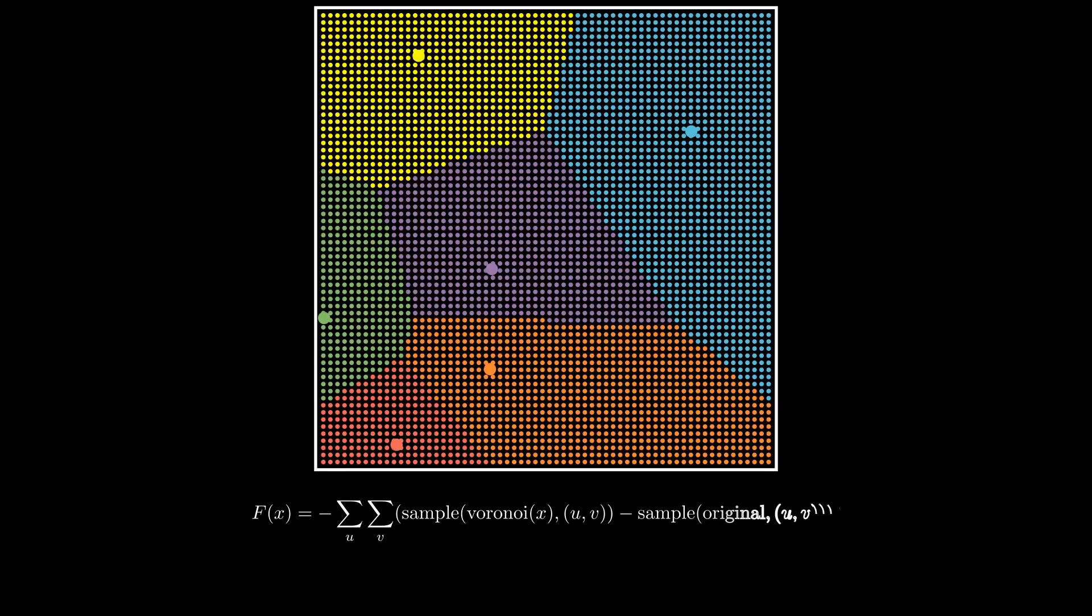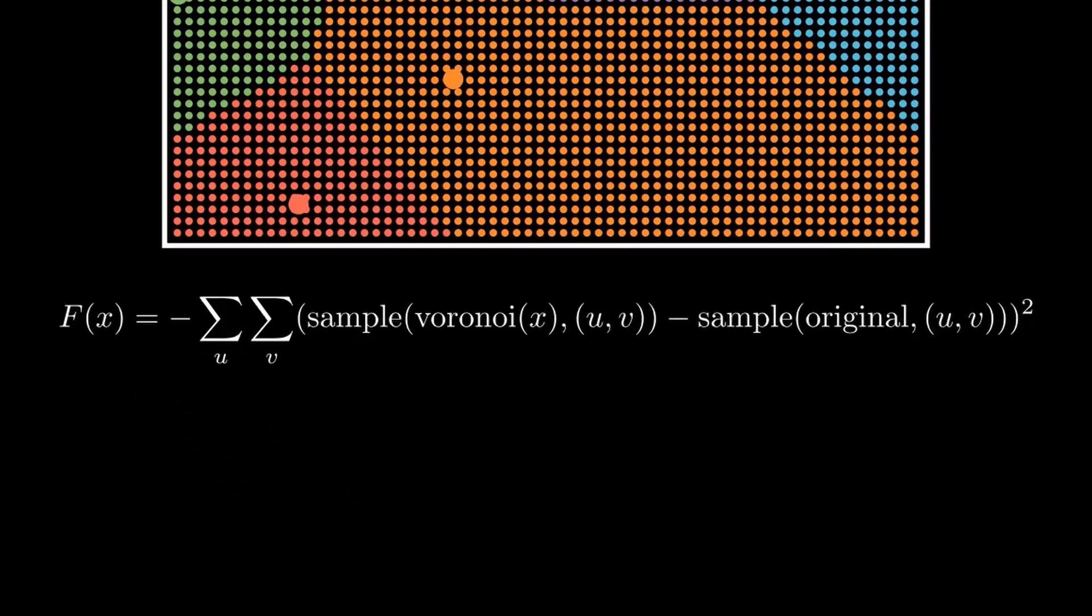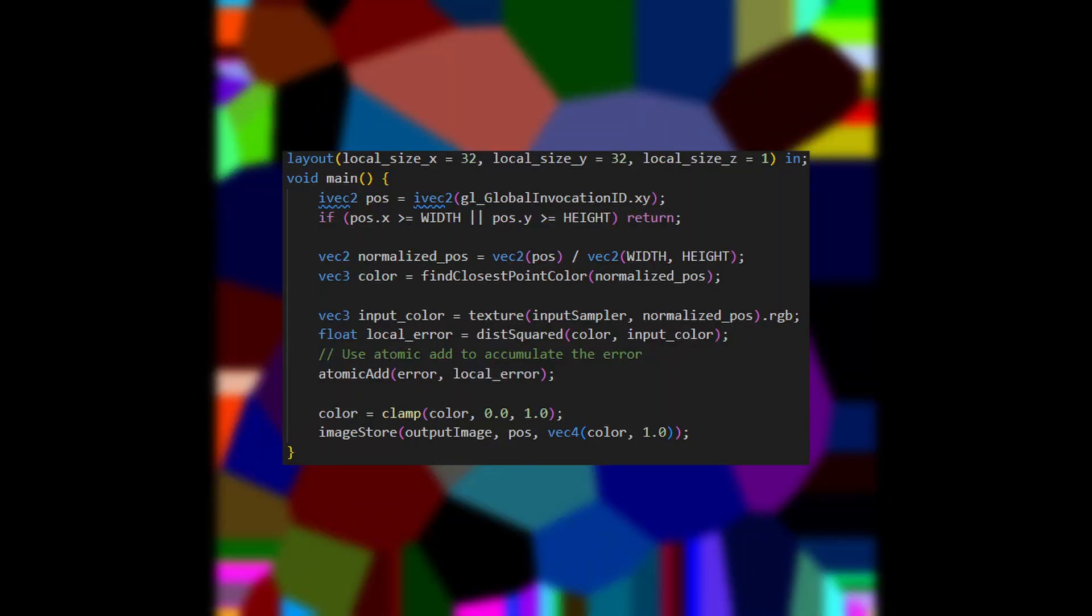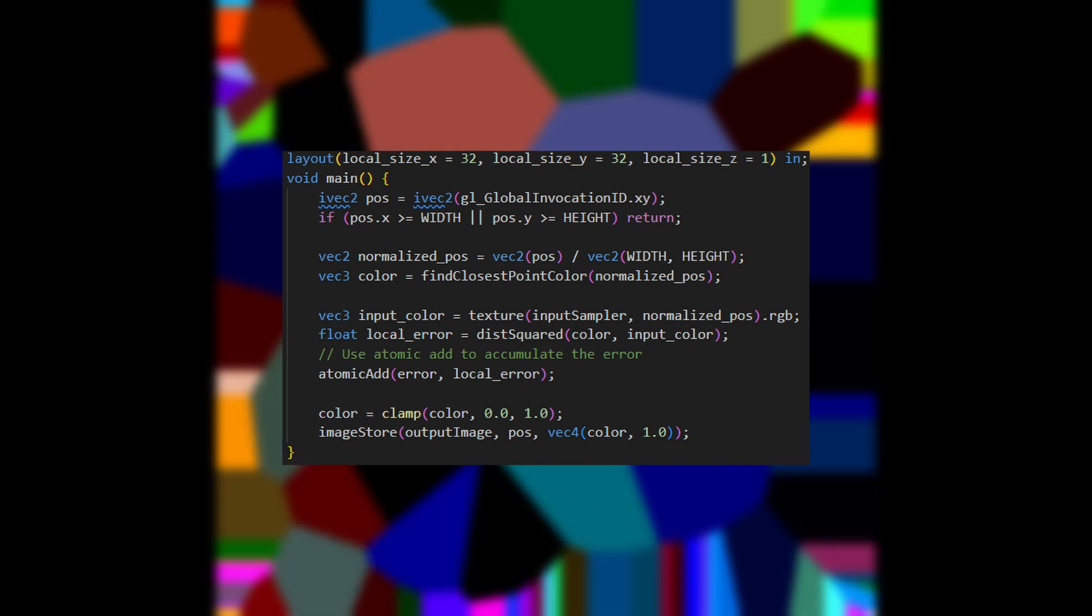We can describe the fitness as the negative sum of the squared distance between each pixel in the generated image and the color at the same position in the original image. Because you take the squared distance between colors, larger differences are weighted extra negatively. In machine learning terms, this is often referred to as an L2 loss function. To speed up computation time, the rendering and error computation is handled by a compute shader.